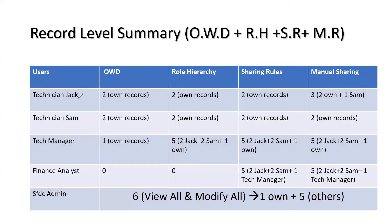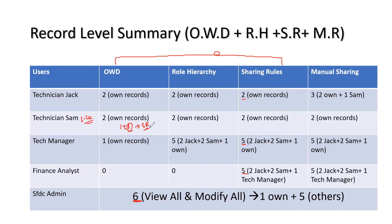Looking at the table: technician Jack has two records from sharing rules, role hierarchy, and OWD combined. Technician Sam has two records from OWD, role hierarchy, and sharing rules. The manager has five records via sharing rules and role hierarchy. Finance analyst got five records from sharing rules. The system administrator by default has full record-level access with view all and modify all. Now with Sam on sick leave, one of his records needs immediate assistance. Sam would notify the manager, and then the manager, record owner, or admin can share that record with Jack.